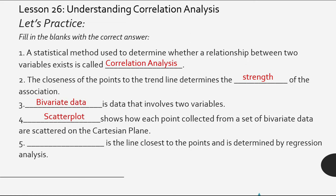Finally, for number five, blank is the line closest to the points and is determined by regression analysis. This is what? Very good. Trend line. So did you get them all? Okay. Correct. Very good.